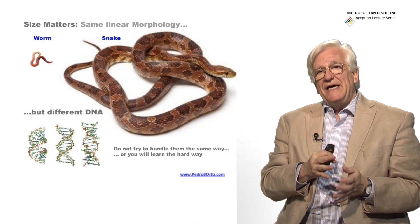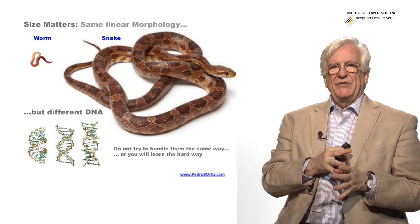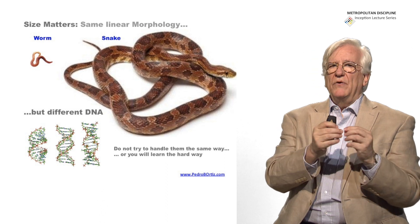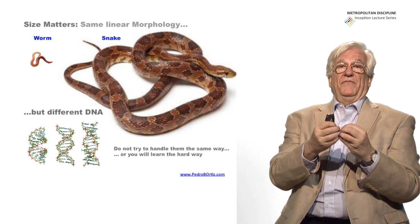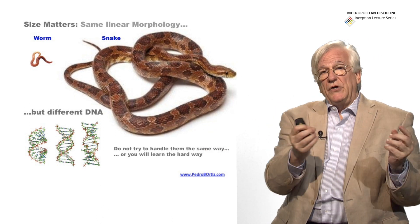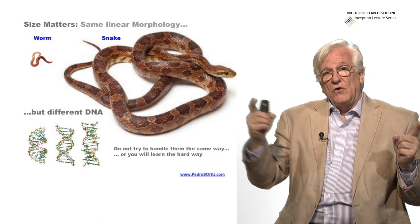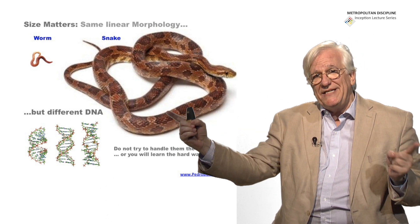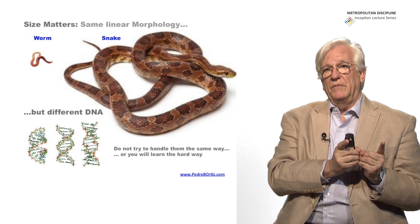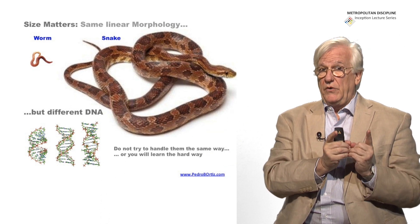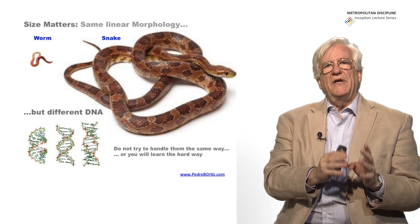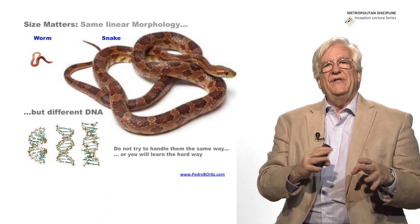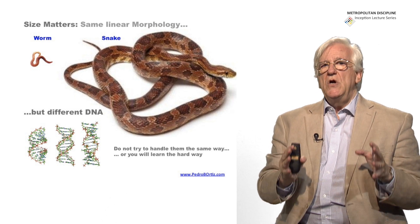Size matters. You don't design a metropolis the way you design a city. Even if a worm and a snake have similar shapes because they are elongated, if one is 10 centimeters and the other is one meter, they have different DNA and you have to deal with the snake in a different way than you deal with the worm. If you try to deal with the snake the way you deal with the worm, you're in trouble. Size matters — we are dealing with different DNAs and we have to approach it in a completely different way than we approach cities.